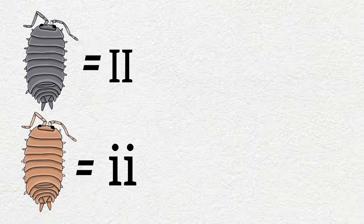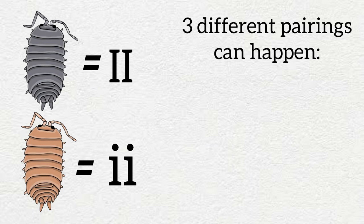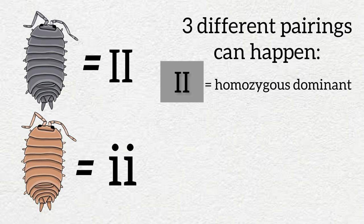When we breed these two individuals together there are three different pairings that can happen with these alleles. There could be two dominant alleles, big I big I, which will make the carapace gray. Individuals with two dominant alleles are called homozygous dominant.